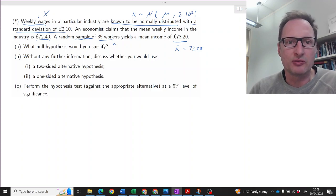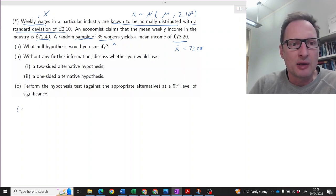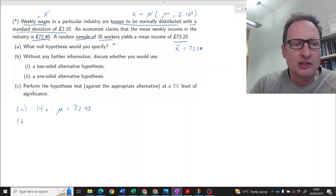So this whole set of information, we will use all of these pieces in a moment. Firstly, part (a): What null hypothesis would you specify? Well, someone claims that the population mean, the average weekly income, is 72.4.